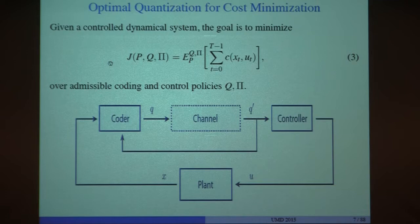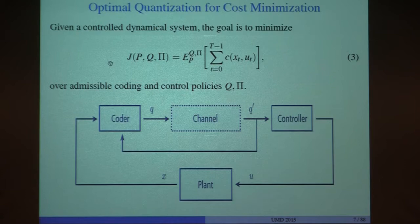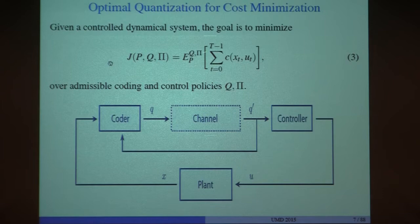In today's talk, we'll be focusing on two aspects: quantization for cost minimization, and quantization for approximate optimality of finite models. These are very much related problems, and we'll see the connection towards the end. Given a cost function—it can be finite horizon or infinite horizon—the controller has access to the state only through the channel outputs. Q represents the channel input or encoding policy, and pi represents the controller policy. The goal is to minimize this cost function, subject to a given physical channel, in a joint optimization problem between the encoder and the controller.